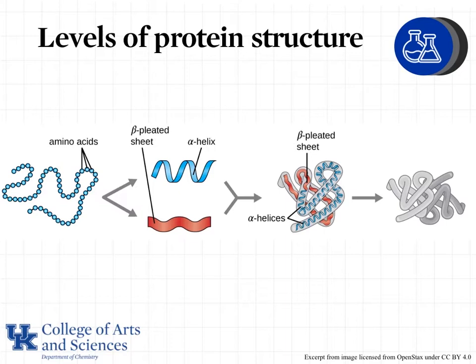The protein structure has four levels. It is essential for a protein to function correctly that it have all four levels of structure and that they be correct for that particular protein. If there's an error or a typo, for example, in the sequence of amino acids, then we may not form the structures we need for that protein or enzyme to function as it should.